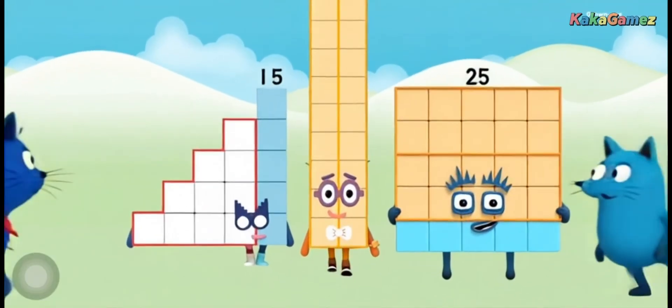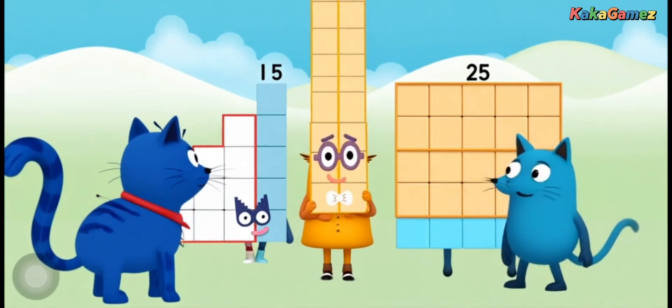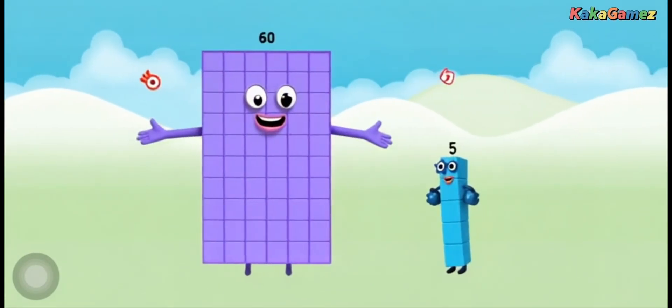What happens if number blocks 15, 20, and 25 come together? That's right, you'll get a brand new number blocks, 60.